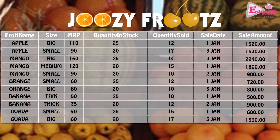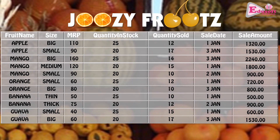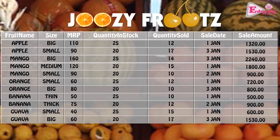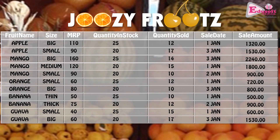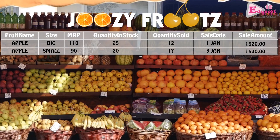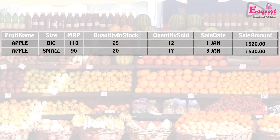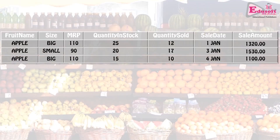Juicy Fruits is a fruit shop whose details are stored in a simple table format: fruit name, size, maximum retail price, quantity in stock, quantity sold, date, and amount earned after each sale. There are two sizes of apples — big and small — with their distinct MRPs, and sales for January 1st and 3rd are shown. When another sale of big apples occurs at MRP 110, a new record is added: 4th Jan, 10 kg of big apples sold, earning 1100 rupees, with stock updated to 15.